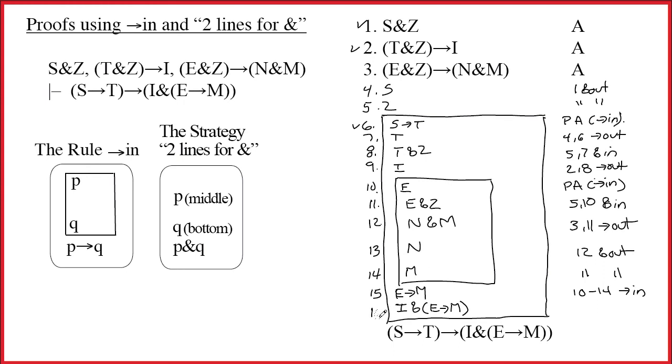Now 16. This was an ampersand. I need to have the two halves on separate lines. I already had the I on 9. I proved the E arrow M. So, 9 comma 15 ampersand in.